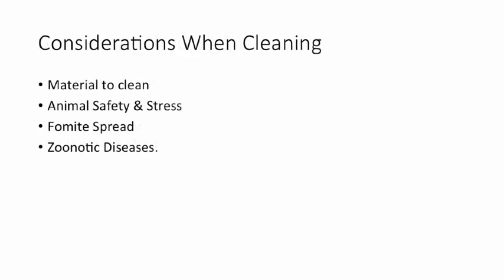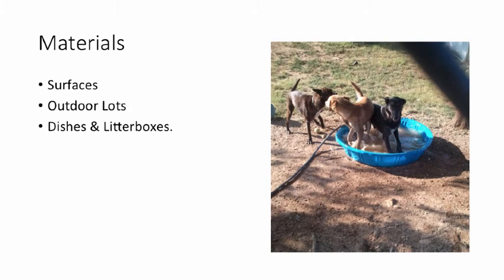Now that we've chosen a disinfectant, let's think about what to consider as we clean through the shelter: the material we're cleaning, animal safety and stress, fomite spread, and zoonotic diseases. When thinking about surfaces — are we cleaning a metal kennel or a concrete floor with cracks? Untreated concrete can be more porous, where pathogens and water sit in cracks and don't dry effectively. Wooden outdoor cat patios and carpeted areas are much harder to thoroughly disinfect.